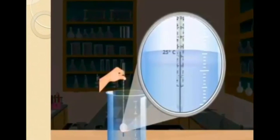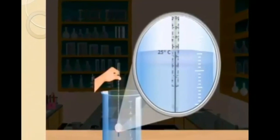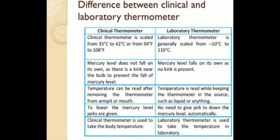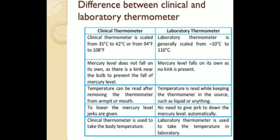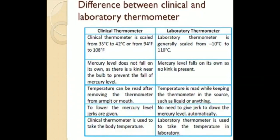The important thing is that the reading must be noted while the thermometer is in contact with the object. In a clinical thermometer, you can take it out and note the reading because a constriction — the kink — prevents the mercury from falling. But in a laboratory thermometer there is no kink, so mercury falls back immediately when taken out. The bulb must stay in contact with the object being measured.